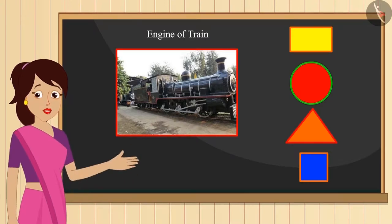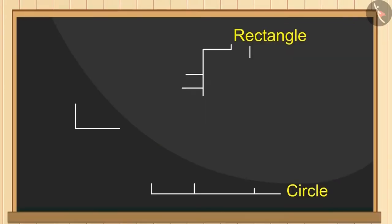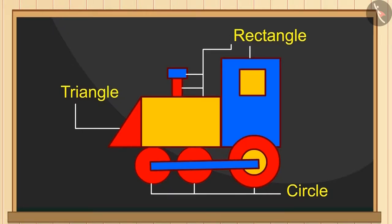If you want, then you can pause the video over here and think. See this. Its wheels are like a circle and its chimney is made of two rectangles. Rectangle to draw the whole engine and one window in the shape of a square.